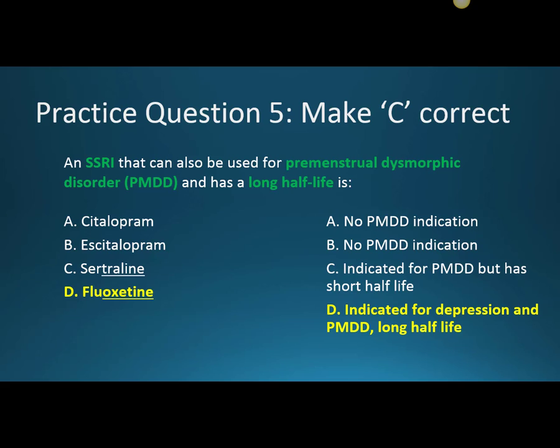Question five: an SSRI that can also be used for premenstrual dysmorphic disorder (PMDD) and has a long half-life is D, Fluoxetine. A and B are incorrect because there is no PMDD indication for citalopram or escitalopram. Sertraline is actually indicated for PMDD but has a shorter half-life. Fluoxetine is correct because it is indicated for both depression and PMDD, and has a really long half-life. Fluoxetine and its metabolite stay in the system longer, which is good for those who forget to take their medication — but if switching to a new SSRI, the patient is at higher risk of serotonin syndrome. A helpful mnemonic: fluoxetine starts with 'flu,' and the flu typically lasts around a week.